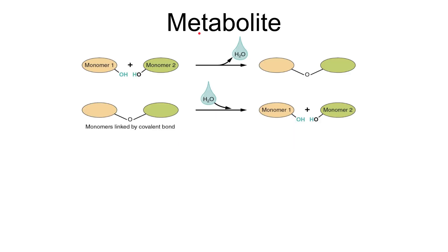Next we have the metabolic properties of water. We've mentioned in lots of previous topics how water is required for condensation and hydrolysis reactions. So you can see here in the formation of a polymer from monomers we have two hydroxyl groups reacting together, water is released, and what's left behind is some form of covalent bond.